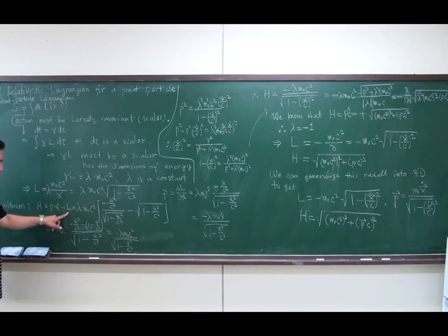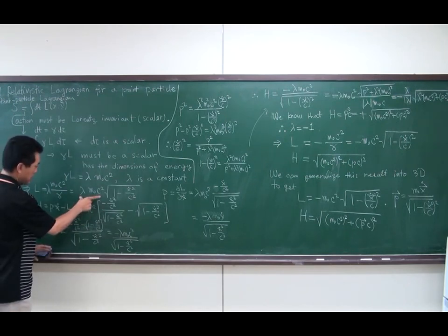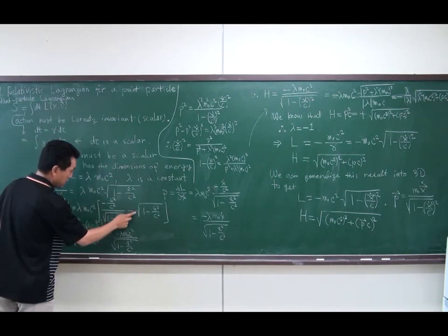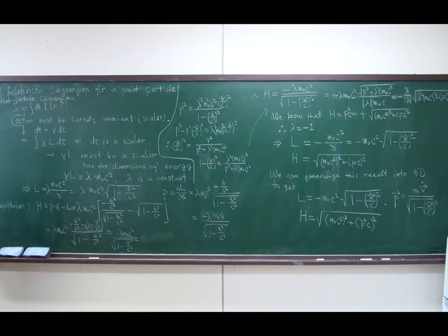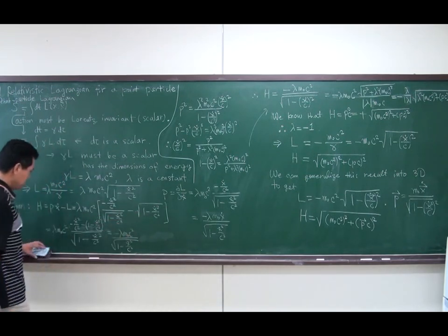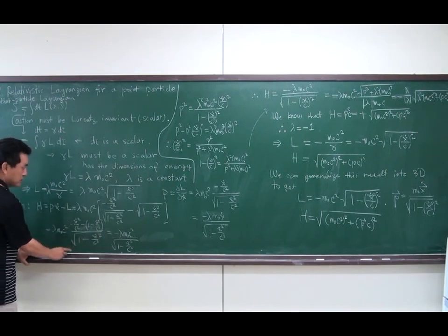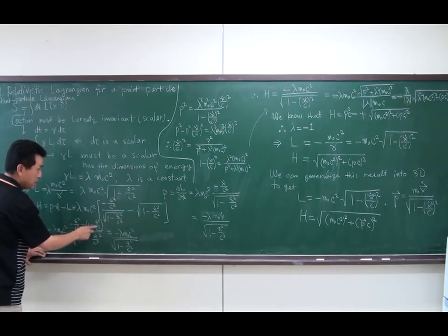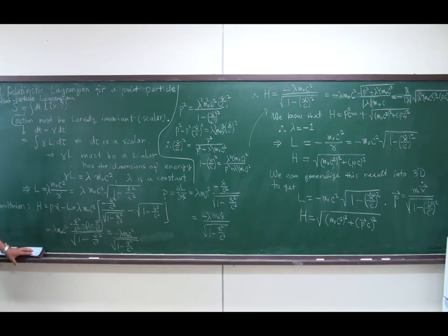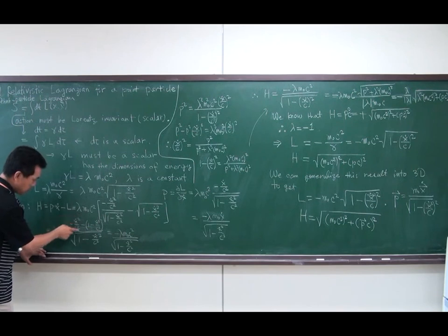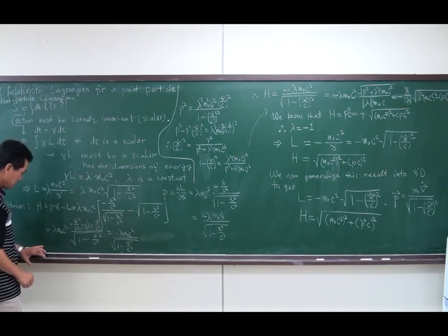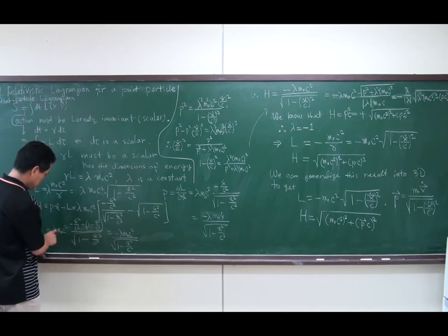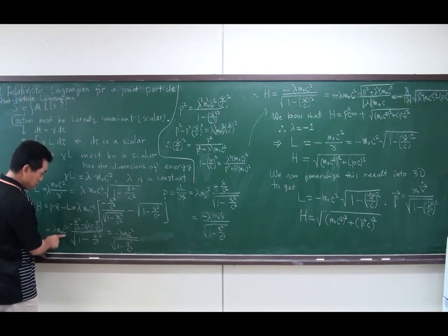Subtracting the Lagrangian — which has the same prefactor with the square root in the numerator — we combine the two terms. We get a common factor with gamma in the denominator, and opening the parenthesis gives 1 minus (1 − ẋ²/c²). The ẋ² terms cancel exactly, leaving the Hamiltonian as −lambda·m₀c²·gamma.